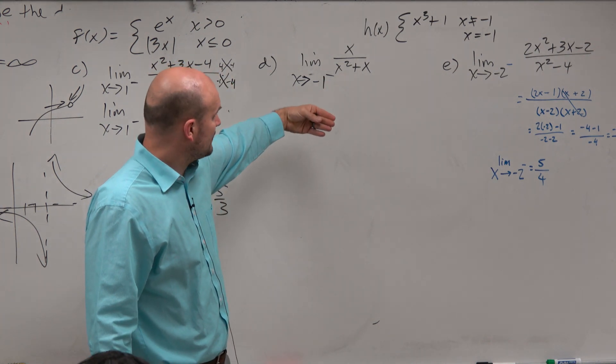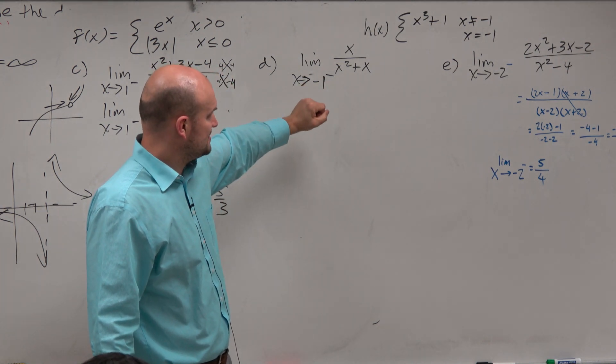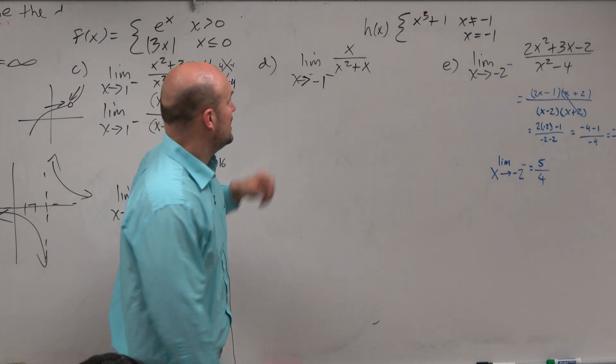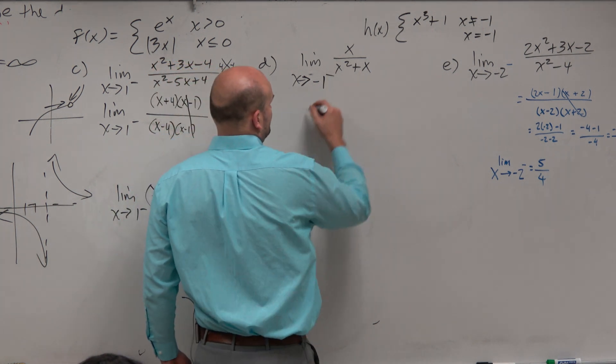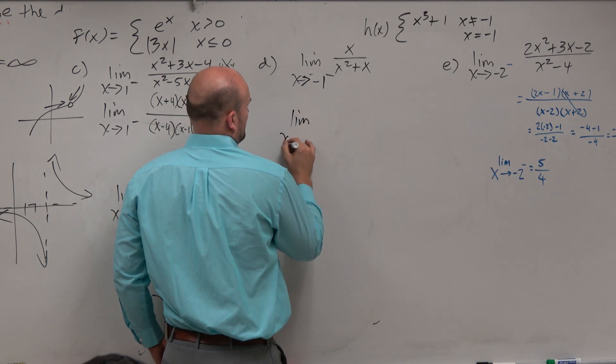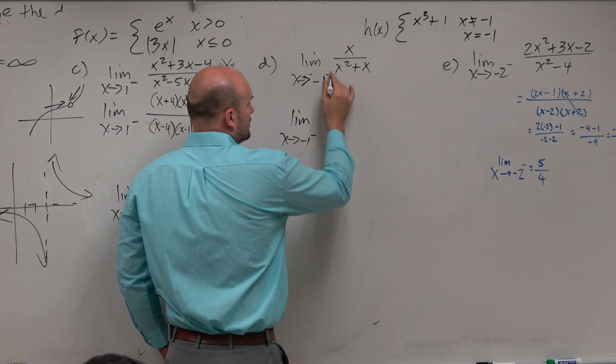In this case, it was actually supposed to be from negative 1 from the left. So we can't plug in a negative 1. We get 0 in the denominator. However, can we simplify this? Can we factor out an x?